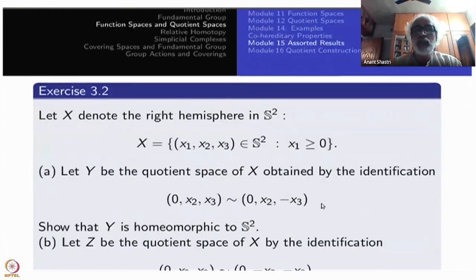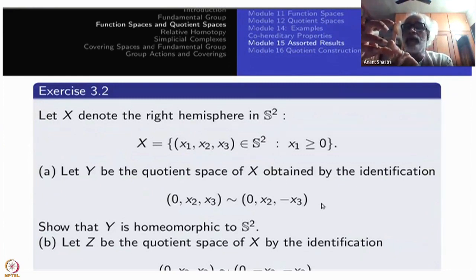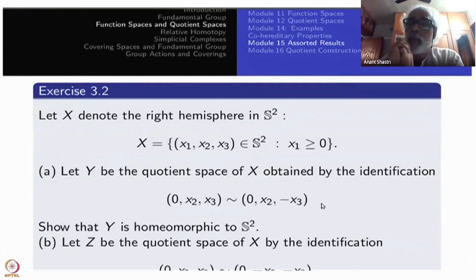The first one is the quotient space obtained by identifying similar to the first exercise. This time, I will not touch the x_2 axis, x_2 coordinate. (0, x_2) as it is, but x_3, corresponding x_3 will be identified to -x_3. So this is the boundary which is actually circle. On this circle, I am identifying x_3 with -x_3. So this is not antipodal action. You have to be careful here. So that Y is, the quotient is homeomorphic to a closed thing now, full S^2.